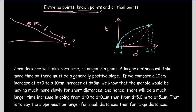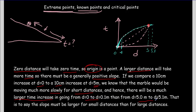Let's go through how you'd write that reasoning in words. First, if distance equals zero, time must be zero, so the origin is a point on the curve. Second, larger distance means more time, so there's a generally positive slope. Then we compared a 10 cm increase at short distances to the same increase at 5 meters. The reasoning is that the marble moves much more slowly at short distances, giving a much larger time increase there than at long distances. So the slope must be larger for small distances than large distances — steep slope connecting smoothly to a shallow slope.